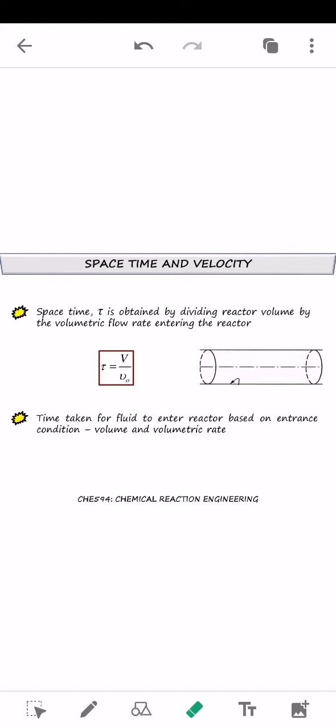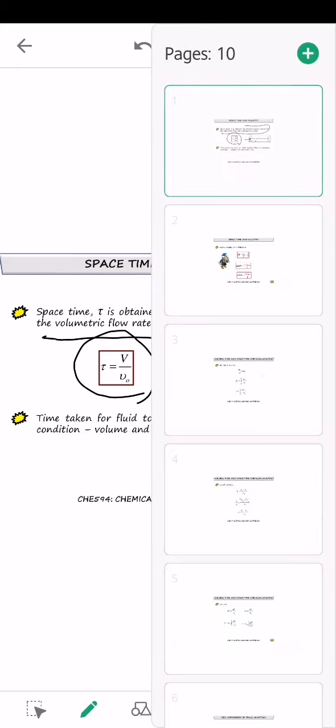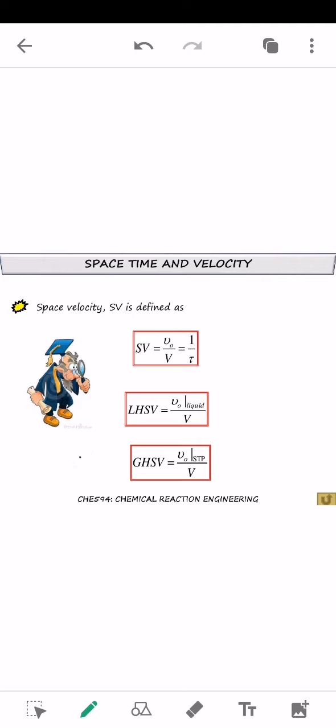So basically space-time is defined by dividing the volume reactor by dividing the volume reactor with volumetric flow rate which enters the reactor. So it is defined with this formula. So basically space-time also can be defined as the time taken for fluid to enter a volume of reactor with certain rate of volumetric.